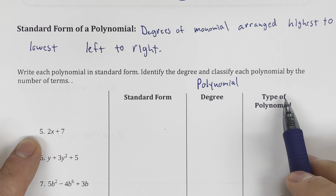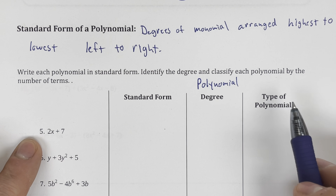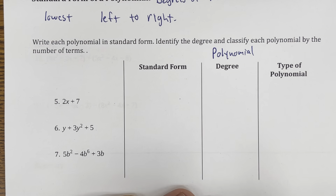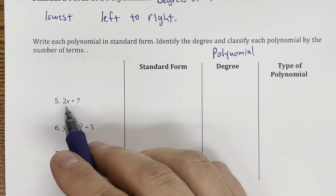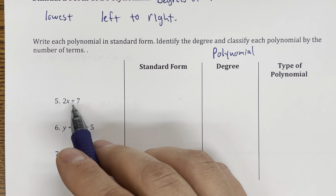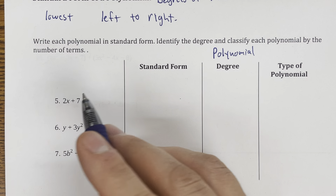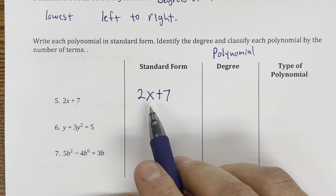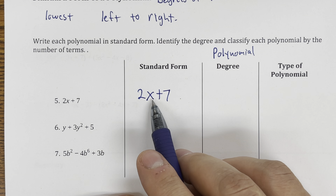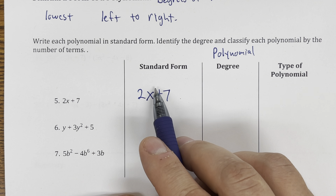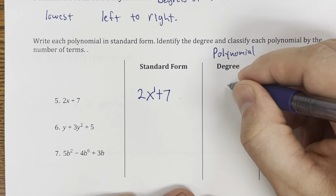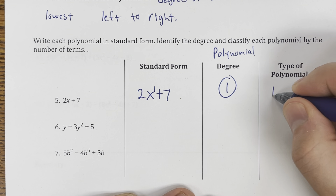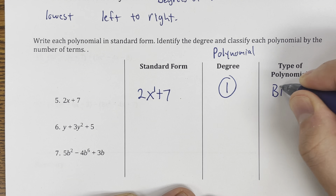For our first example — 2x plus 7 — this term has degree 1 and this has degree 0, so it's already in standard form: 2x plus 7. The degree is the degree of the highest term, which is 1 because this is x to the first. This is a binomial because it has 2 terms.